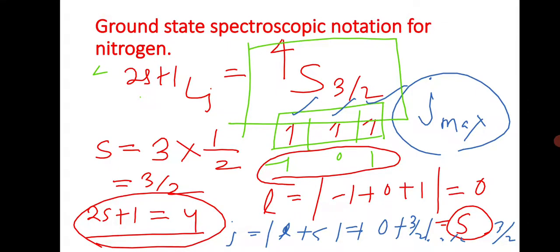These two questions are very crucial — I showed two examples because in one case (carbon) we take J minimum, and in the other case (nitrogen) we take J maximum. This depends on the electron arrangement and the availability of electrons in the different sub-cells: in carbon there was a vacant sub-cell, while in nitrogen all sub-cells were filled. This is the type of question from ground state spectroscopic notation.